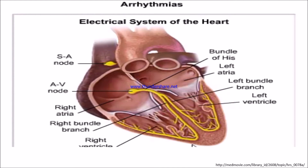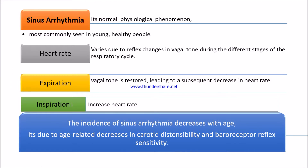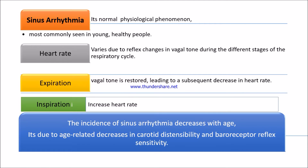Let's see about sinus arrhythmia. Sinus arrhythmia is a normal physiological phenomenon most commonly seen in young and healthy people. The heart rate varies due to reflex changes in the vasovagal tone at different stages of the respiratory cycle. During expiration, vagal tone is increased and it may lead to a decrease in heart rate, whereas during inspiration, the heart rate increases.